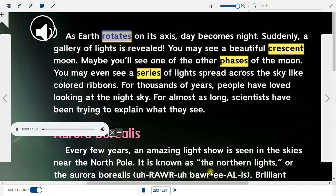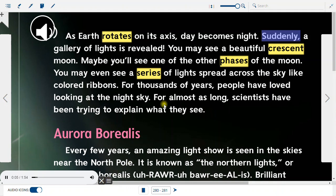As Earth rotates on its axis, day becomes night. Suddenly, a gallery of lights is revealed. You may see a beautiful crescent moon. Maybe you'll see one of the other phases of the moon. You may even see a series of lights spread across the sky like colored ribbons.